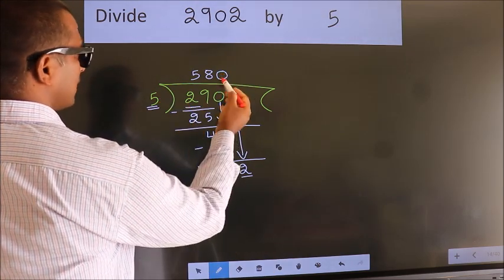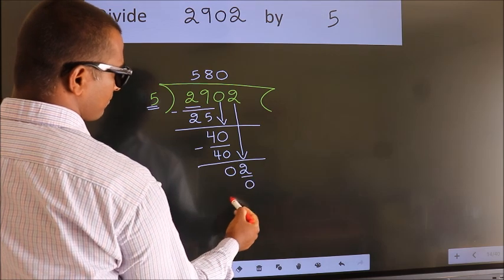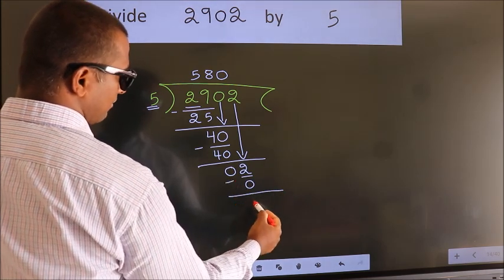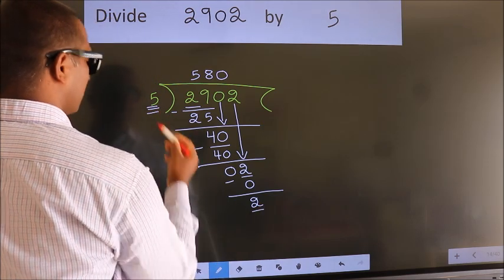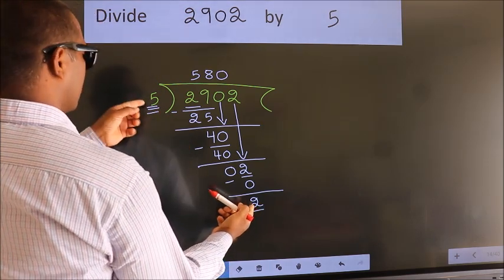So 5 times 0 equals 0. Now we subtract and get 2. Here we have 2, here 5. 2 is smaller than 5.